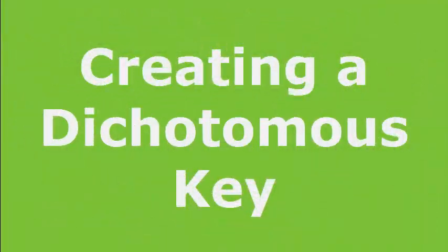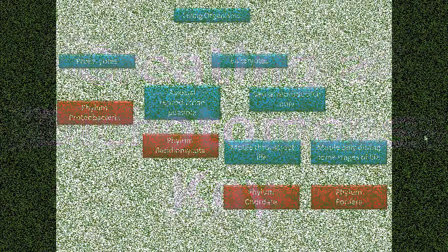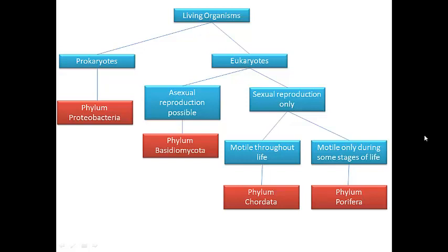This video is going to show you how to create a dichotomous key using the flow map you already created. Here is the flow map I created showing the phyla of four organisms.